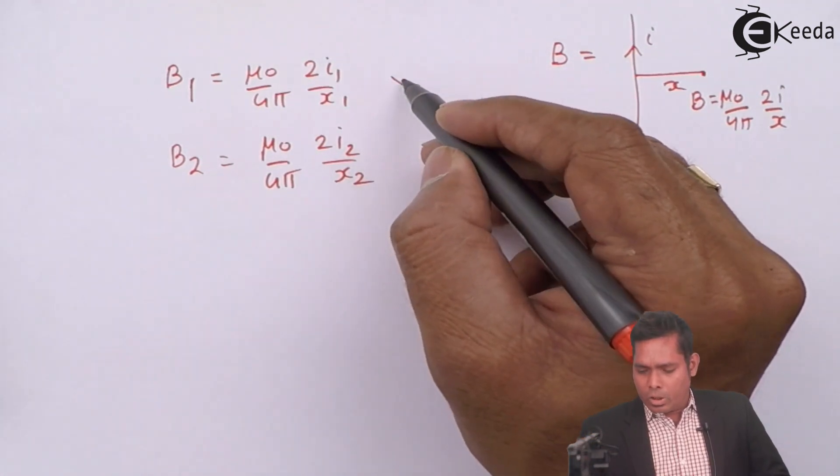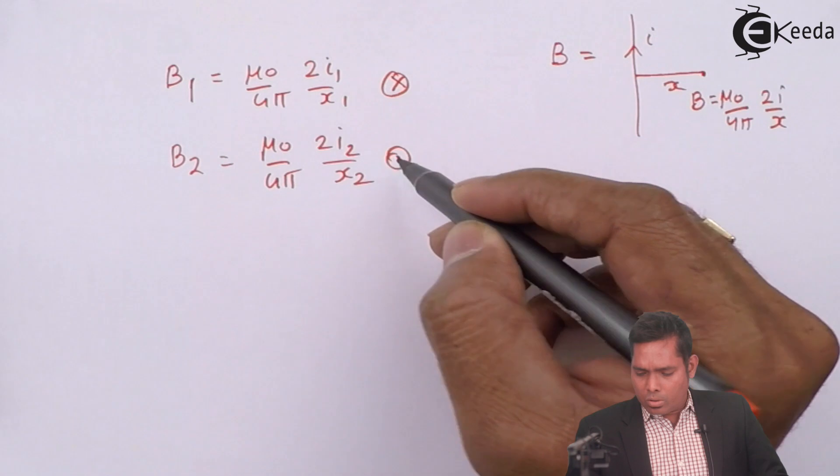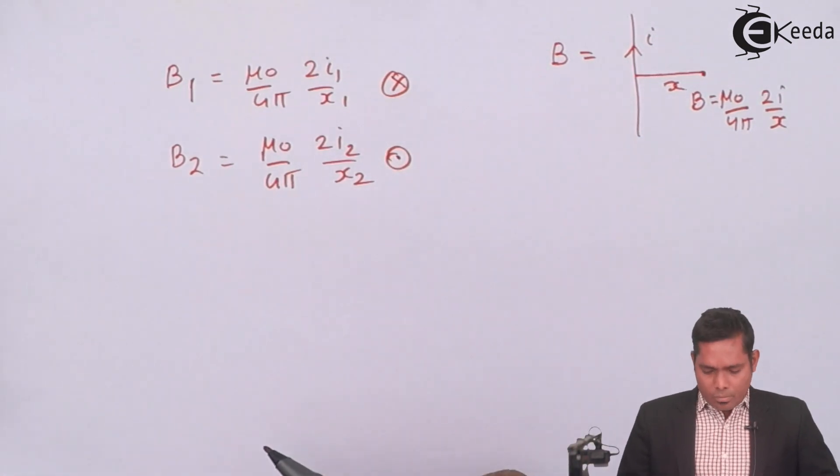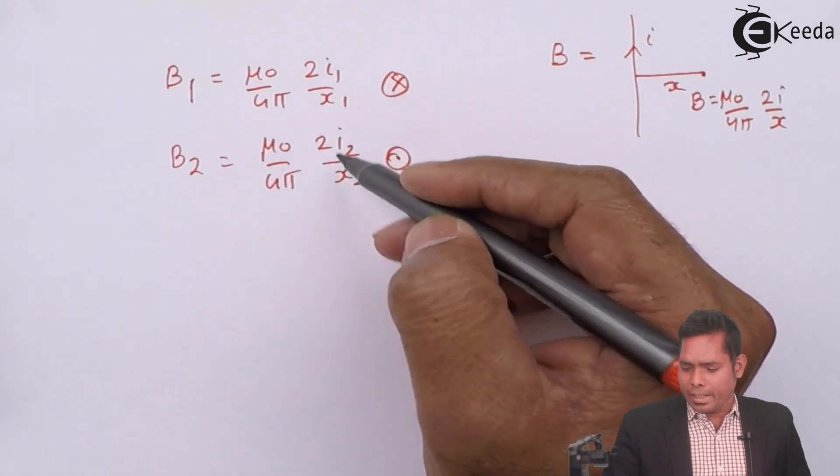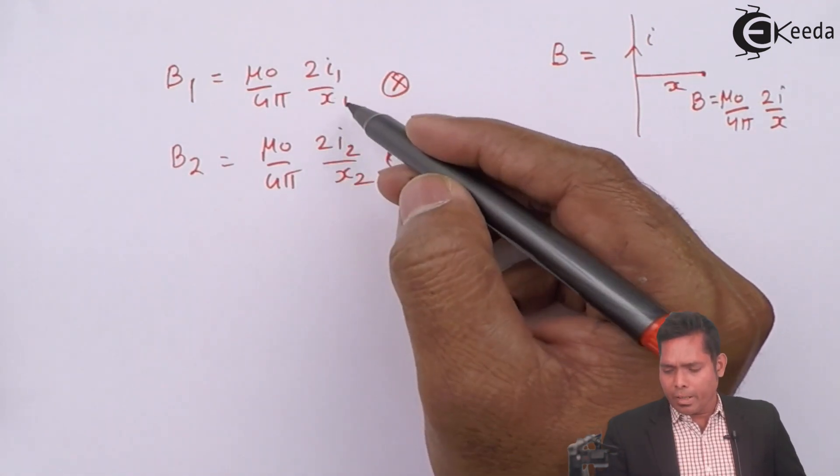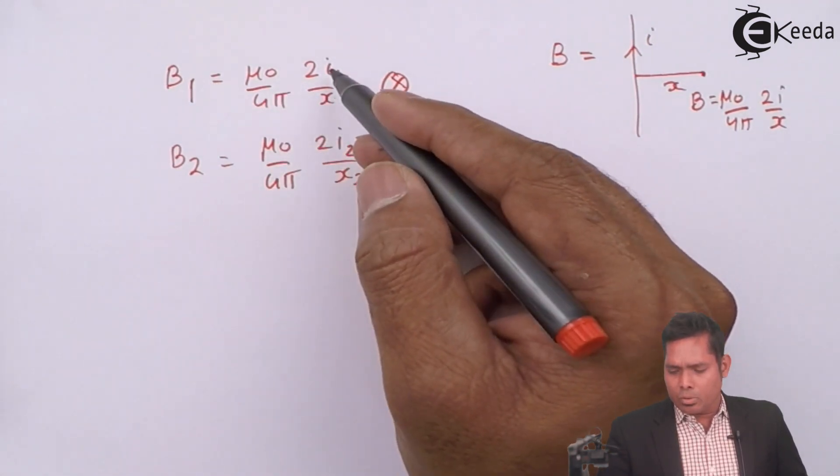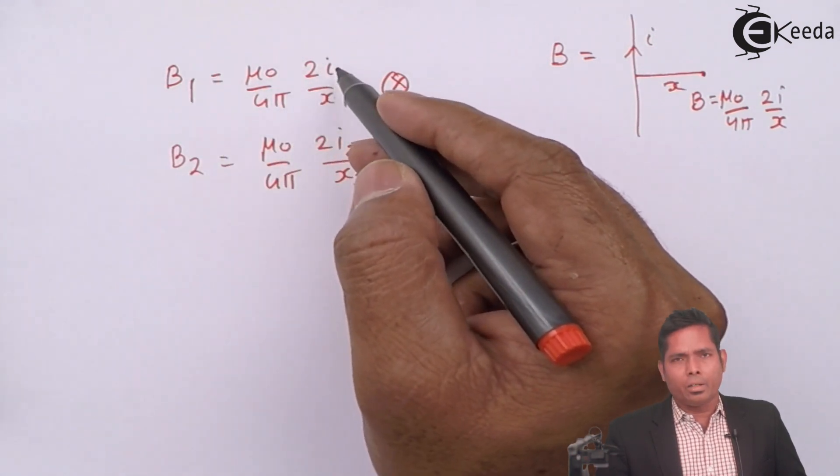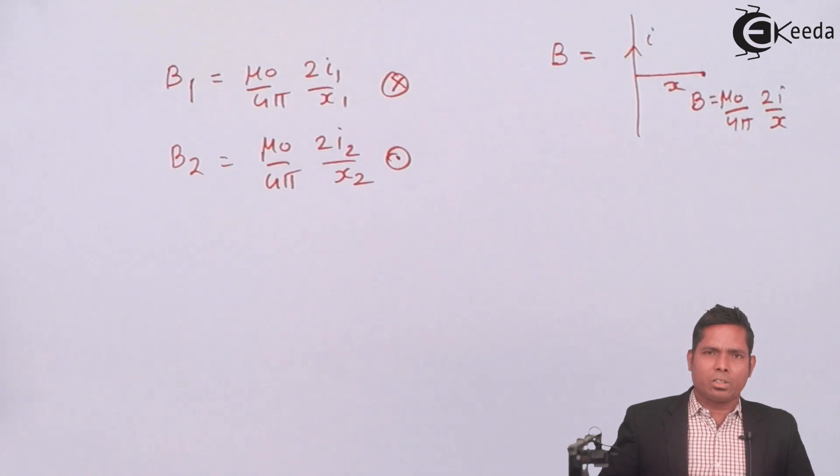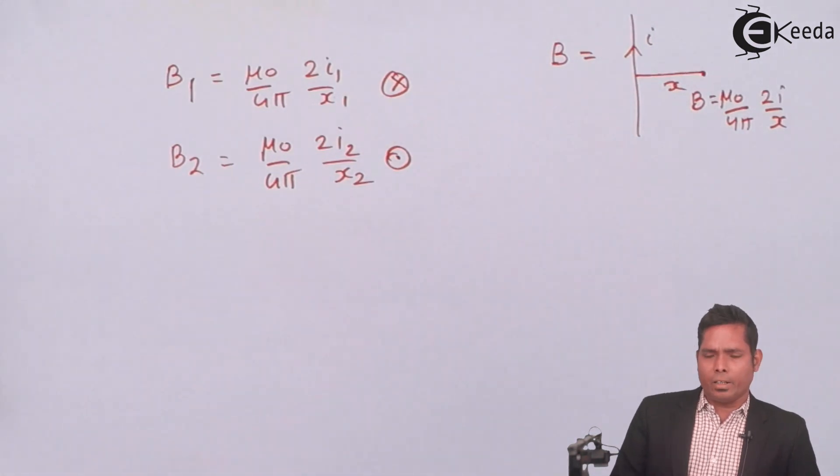This is going into and this is coming out. The one which is having the higher value of, because x is same, because there is midway and everything is same, the one having higher I will have the same direction of net magnetic field.